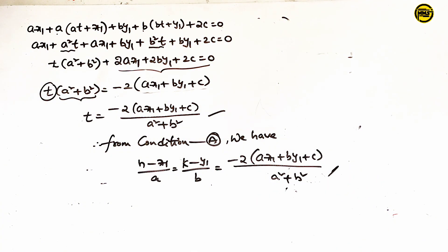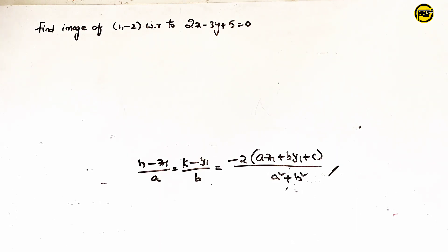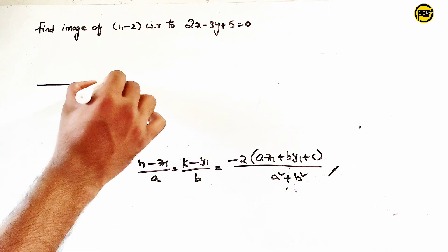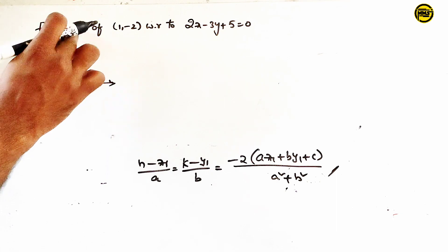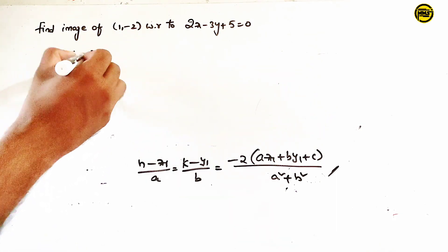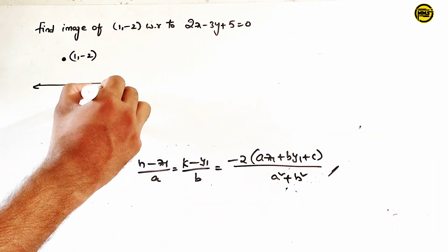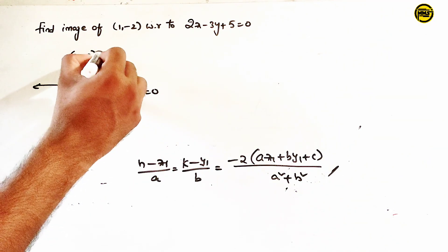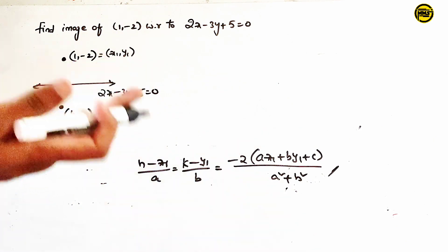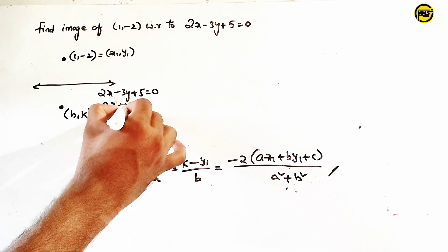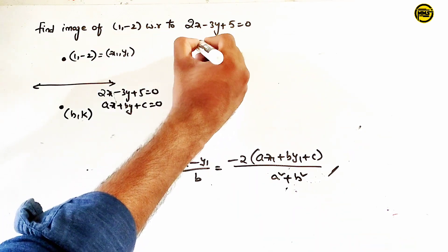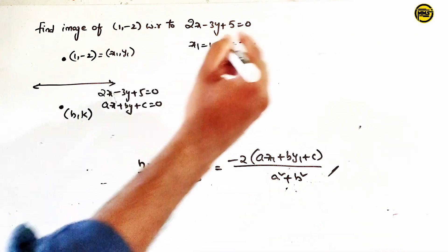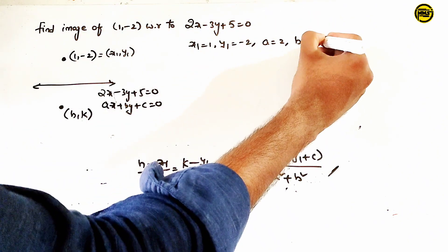This is the important image formula. You must use this condition compulsorily for image of a point problems. Now here is an example: find the image of the point 1, minus 2 with respect to the straight line 2x minus 3y plus 5 equals 0. So x1 equals 1, y1 equals minus 2; a equals 2, b equals minus 3, c equals 5.